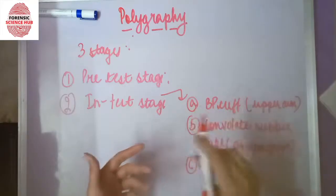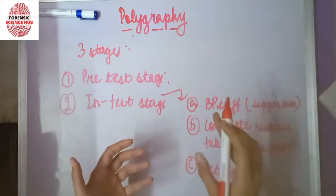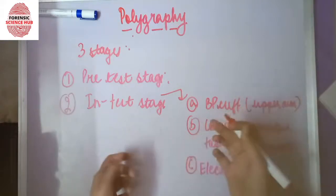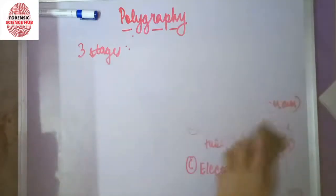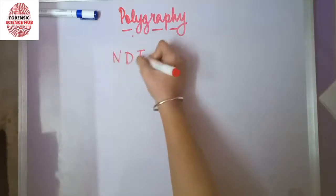After completion, the examiner interprets and evaluates the results of the graph obtained and forms an opinion. The opinion is given in three forms: NDI, DI, or INC.